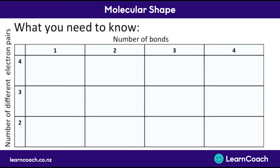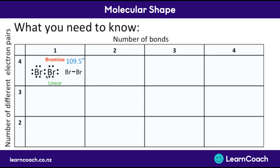Here's what you're going to need to know. Because you already understand how molecules form different shapes, I'll go through the examples one by one. On the top we've got the number of bonds formed, and on the left-hand side the number of electron pairs that exist. For example, if we have bromine, there are four electron pairs around each bromine but only one bond joining them together, making a straight linear shape with 109.5 degrees between each electron pair.